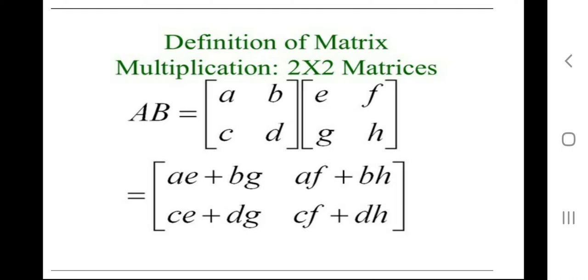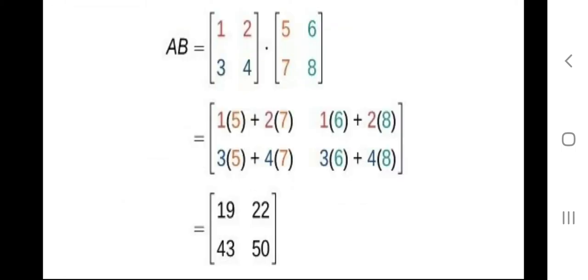Now we see an example: A×B where matrix A has elements 1, 2, 3, and 4, and matrix B has elements 5, 6, 7, and 8. First we take the first row of A, which is [1, 2], and multiply with the first column of B, which is [5, 7]: 1×5 plus 2×7.